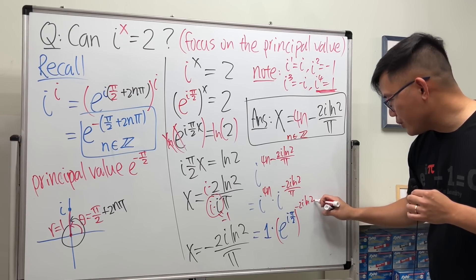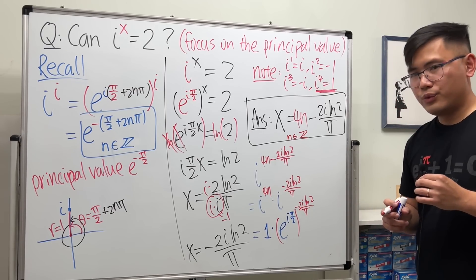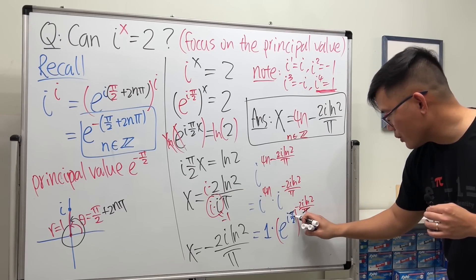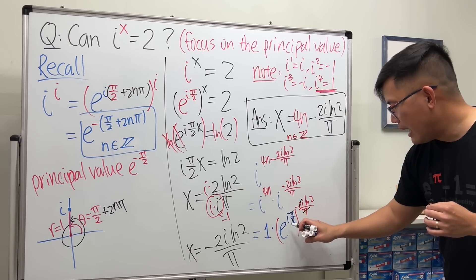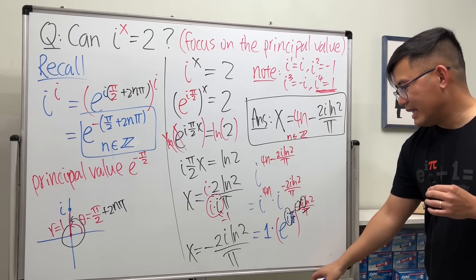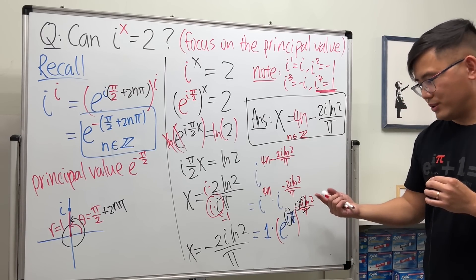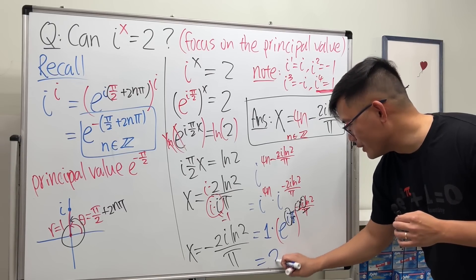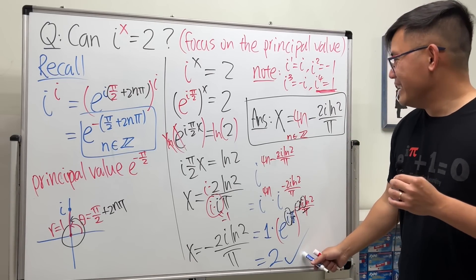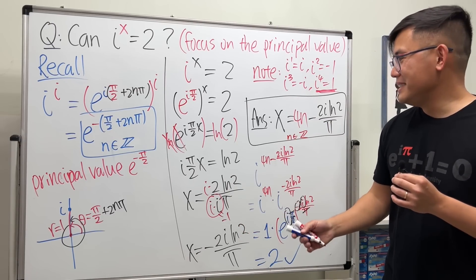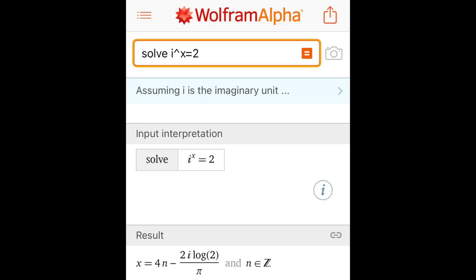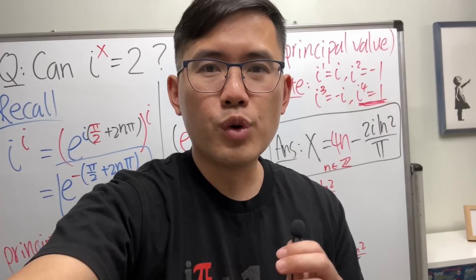Ready for the cancellations: π π cancel, 2 2 cancel, i times negative i will give us positive one, and then e to the ln 2 is just 2. So all in all we do end up with a nice number 2. So it does check. And if you check our work from WolframAlpha, you'll see that this is the answer that they gave us.